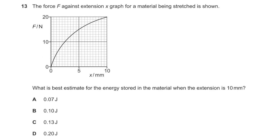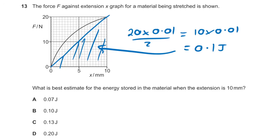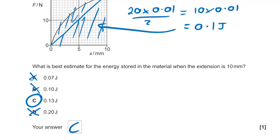Question 13: force against distance graph — what's the best estimate for the energy stored when the extension is 10 mm? The area under the graph is approximately ½ × 20 N × 0.01 m = 0.1 J. It's not going to be exactly that due to the curve, but it won't be double it either. So the answer is C.